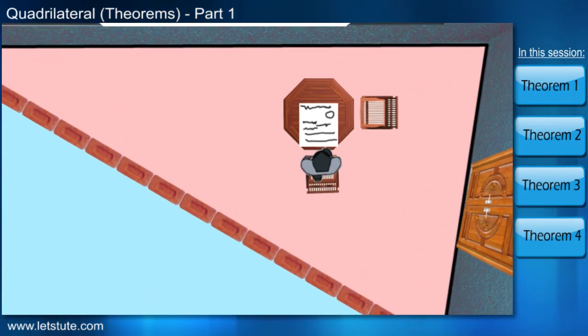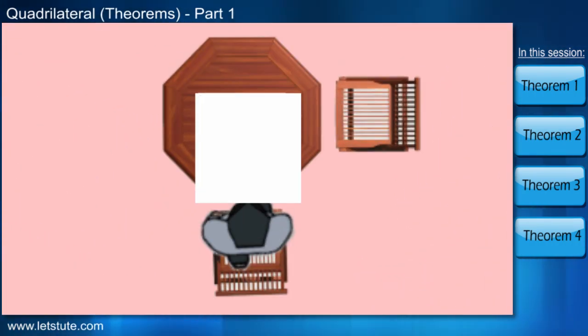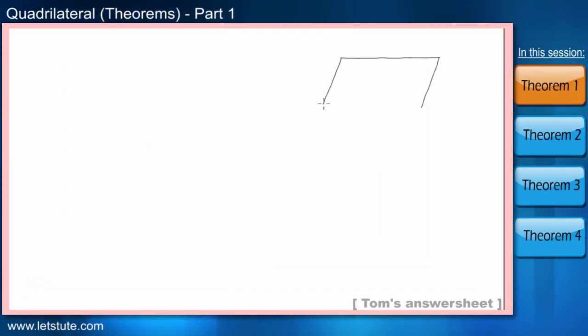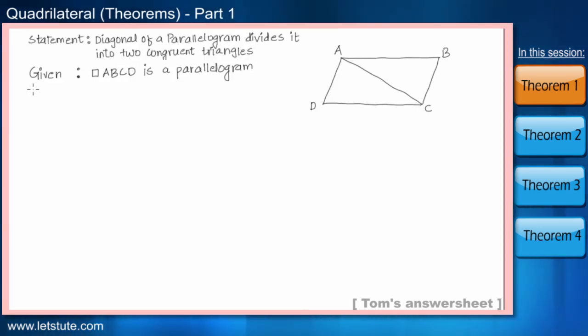Since he was told that he is staying in a parallelogram shaped room. So, he drew a diagram ABCD representing a parallelogram. Where AC is diagonal, dividing this parallelogram into two triangular compartments. Tom has to prove that these two compartments are identical. So, in terms of geometry, he has to prove that these two triangles are congruent.